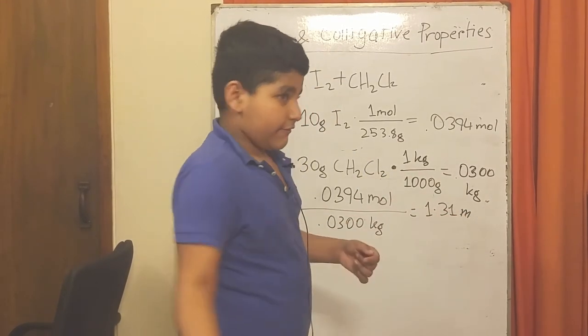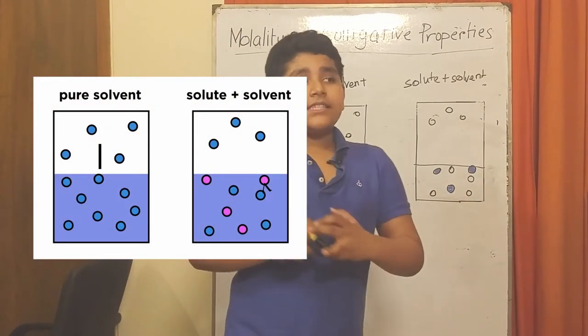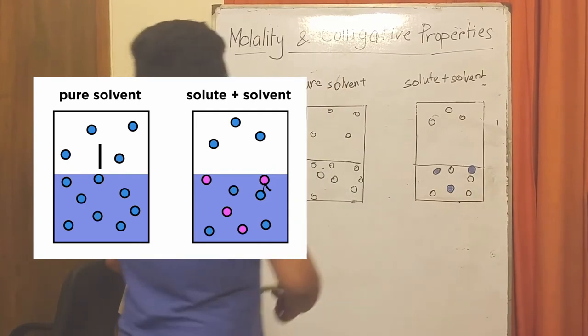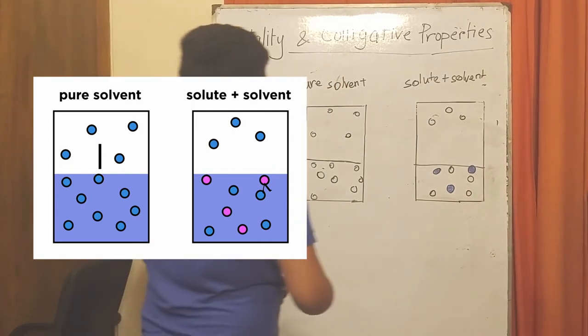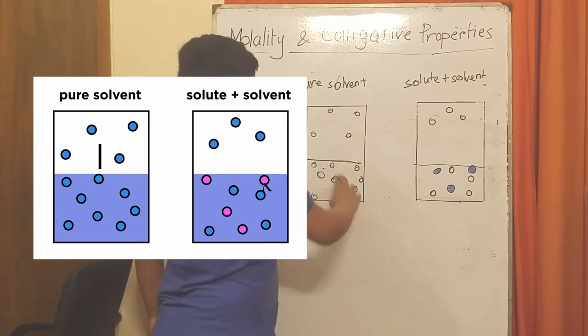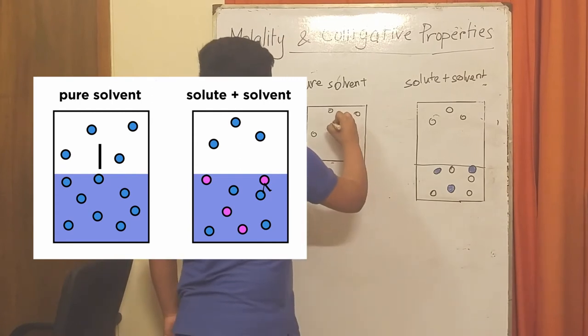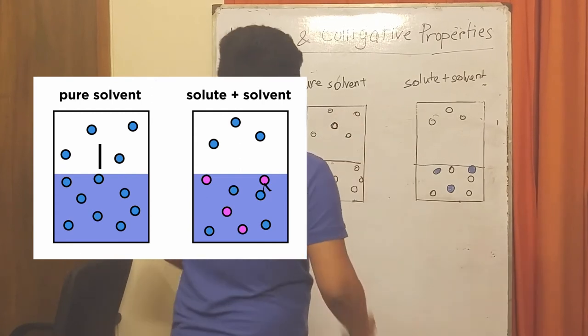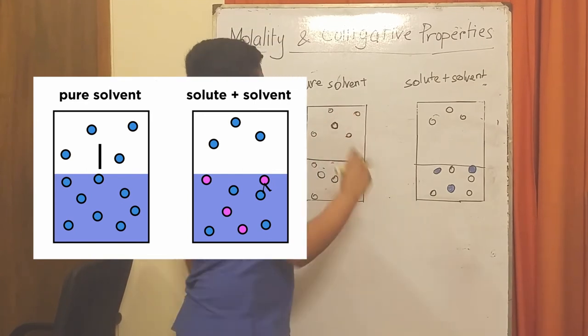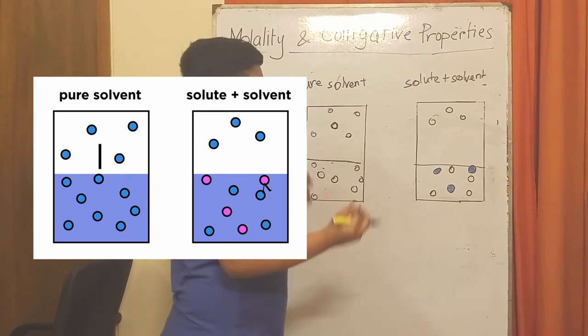Now let's go to the first property: lower vapor pressure. In a pure solvent like this, molecules can easily go to the gas phase spontaneously with no interruptions. The number of particles in the gas phase determines the vapor pressure.